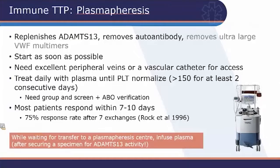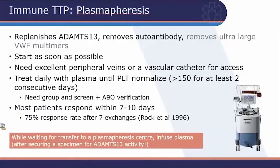If you are remote and transfer to a plasmapheresis center will take at least a couple of hours, and you suspect TTP, you should start transfusing plasma — somewhere between two and four units, depending on volume tolerance. It is critically important to collect the blue top tube for ADAMTS13 activity prior to infusing any plasma. If your lab has a contract to run ADAMTS13, send it; otherwise, transport the tube with the patient so the diagnosis can be confirmed at the receiving institution.